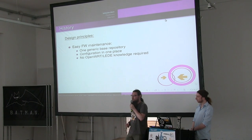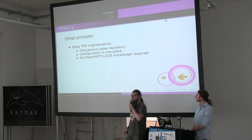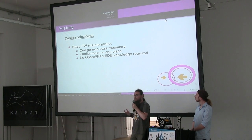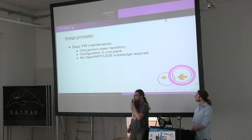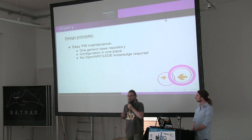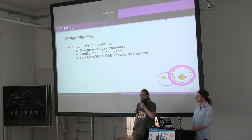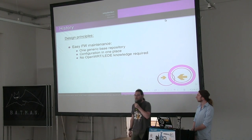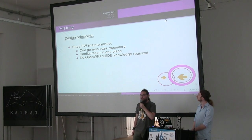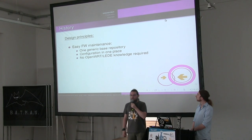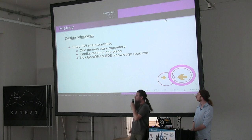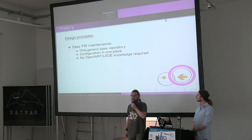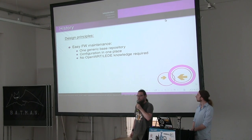Here are some of the principles we deployed when first building the Gluon framework. One was to make maintenance of the firmware as easy as possible for community developers. Instead of forking a base repository and adjusting things in it, we have one generic base repository and a community can just put a little configuration file in the right place to build an optimized firmware for their community. This configuration is a so-called site repository.